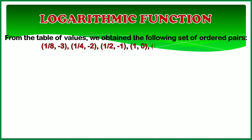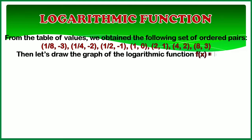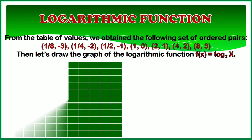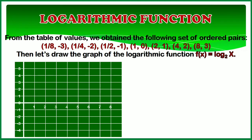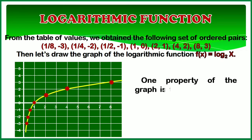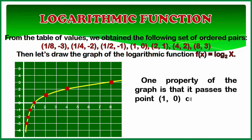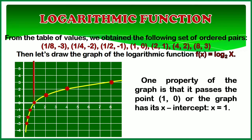From the table of values, we obtained the following set of ordered pairs. Then let's draw the graph of the logarithmic function f(x) equals the logarithm of x to the base 2. One property of the graph is that it passes the point (1, 0), or the graph has its x-intercept x equals 1.